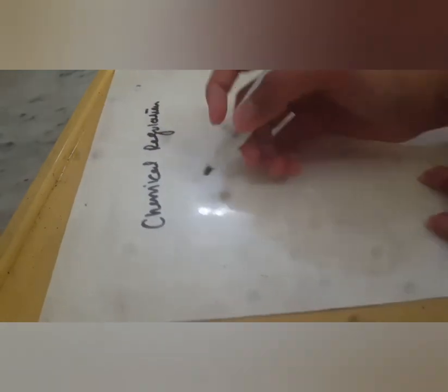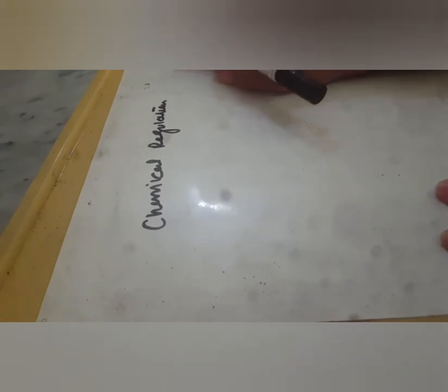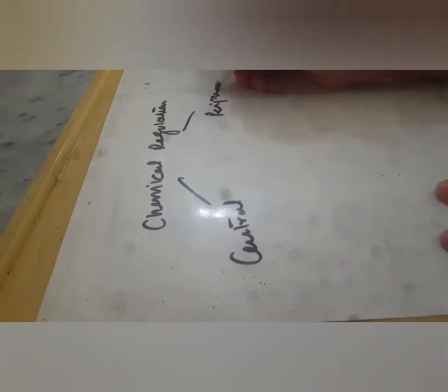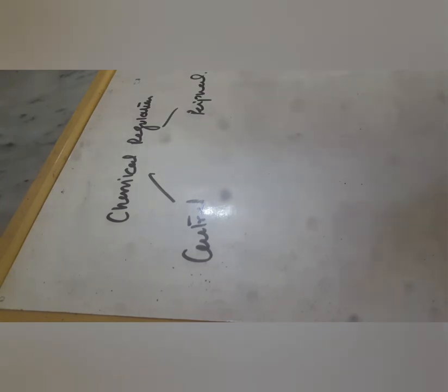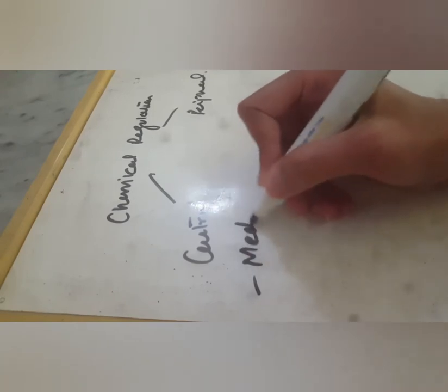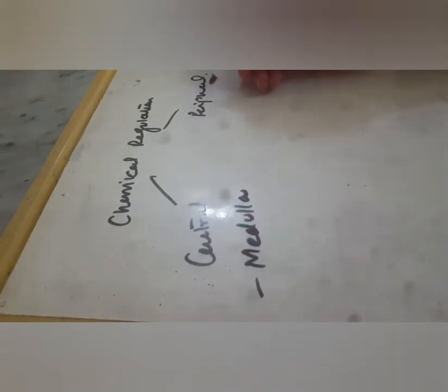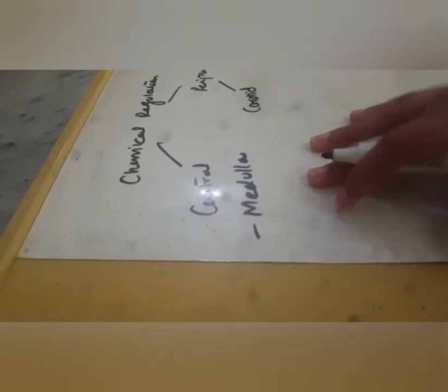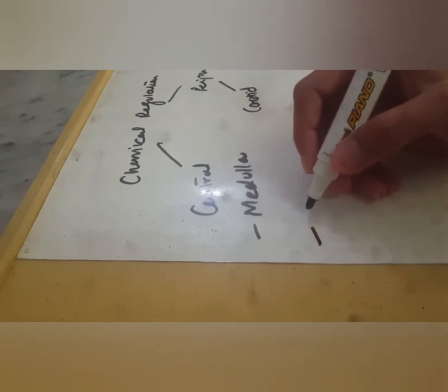The other control is chemical regulation. In chemical regulation, we have chemoreceptors — central chemoreceptors located in the brain, and peripheral chemoreceptors. When there is a disturbance in the pH of our body, these centers are activated. Central chemoreceptors are in the medulla and are sensitive to changes in the pH of cerebrospinal fluid (CSF).